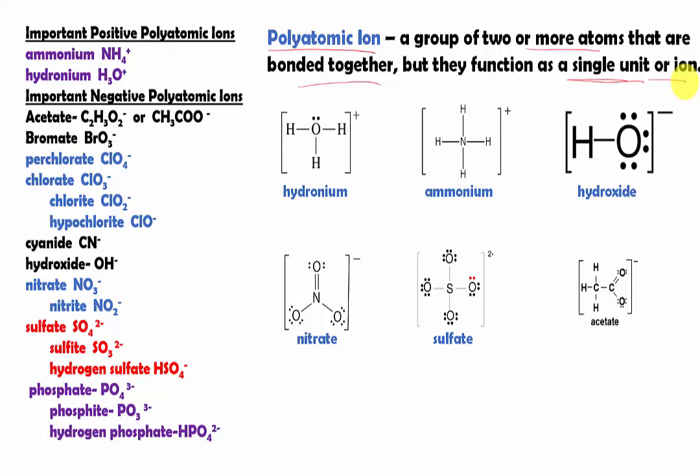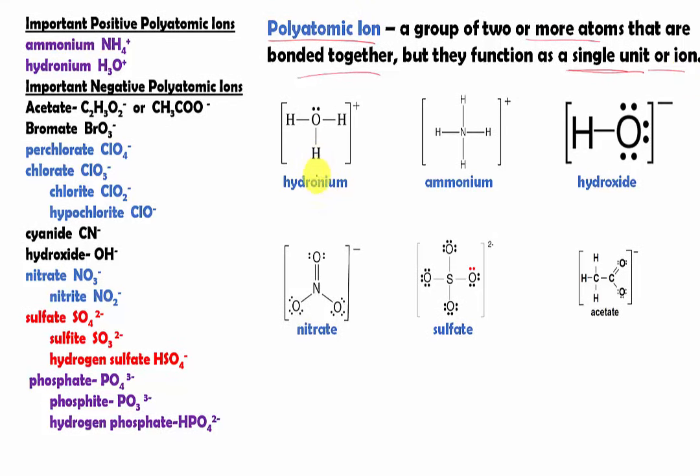Here are some examples. For example, here we have hydronium ion. Basically it's a group of three hydrogen and one oxygen, and they function as a unit with a charge of one plus.